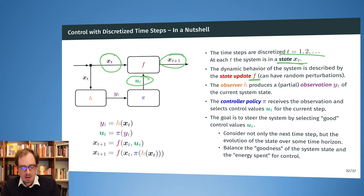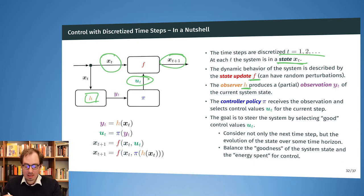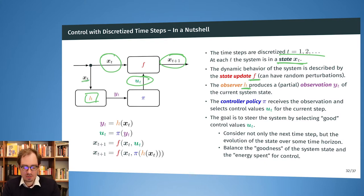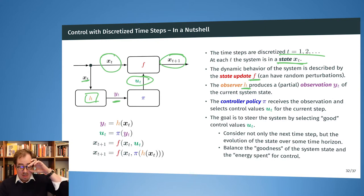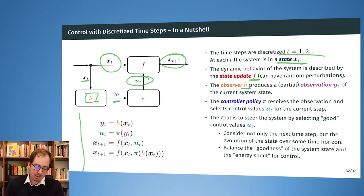How do we know how to influence the system? If we are turning knobs to control our chemical plant, how do we know which direction to turn them? We obviously observe the system. We have an observer h that sits on top of the system and gives us a partial or transformed observation y(t) derived from the current state x(t). And then we have a control policy that tells us: for which observed system state do we select which control values to impact the state update?